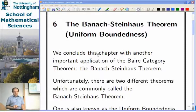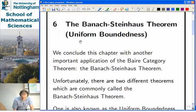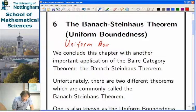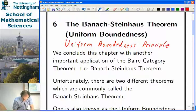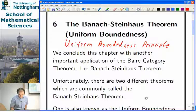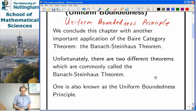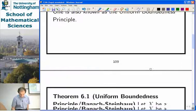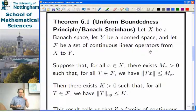Our next task is to do Chapter 6 on the Uniform Boundedness Principle, or the Banach-Steinhaus theorem. We're going to be focused on what I call the Uniform Boundedness Principle. It has a corollary which is also called Banach-Steinhaus. Unfortunately there are two different results called Banach-Steinhaus, and it depends on who teaches the module as to which one is called which.